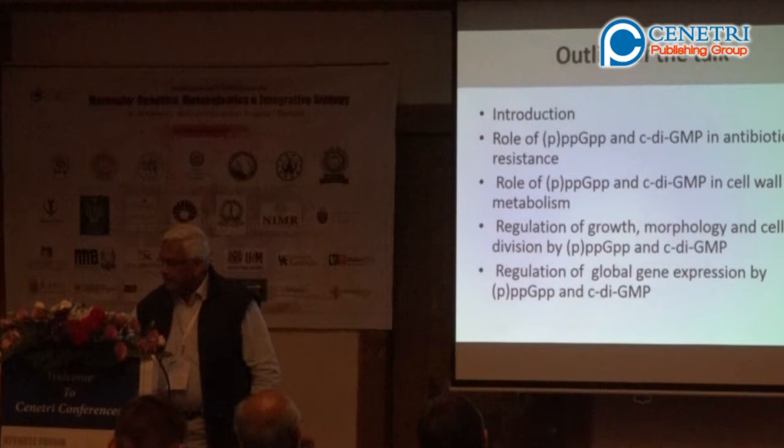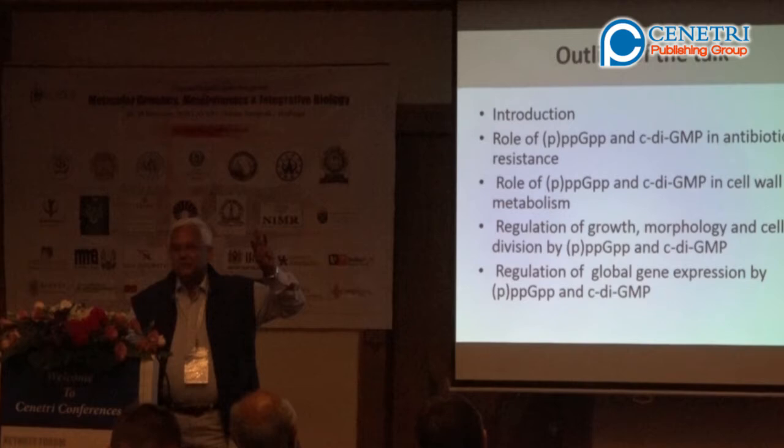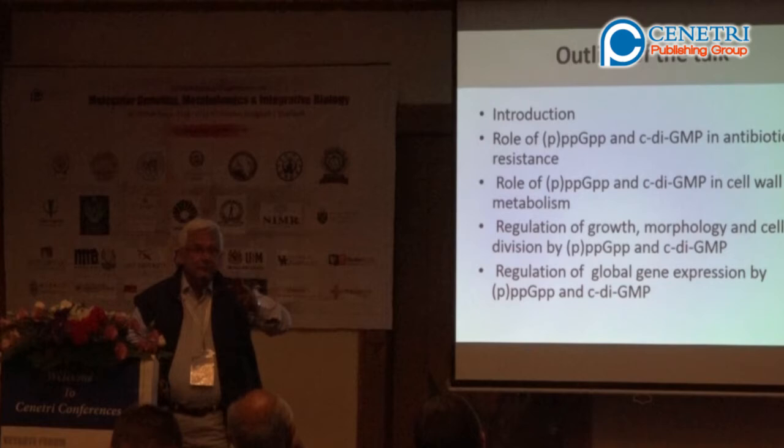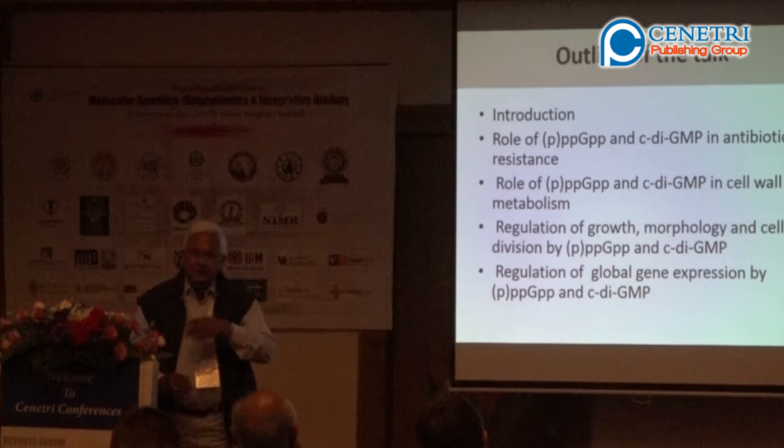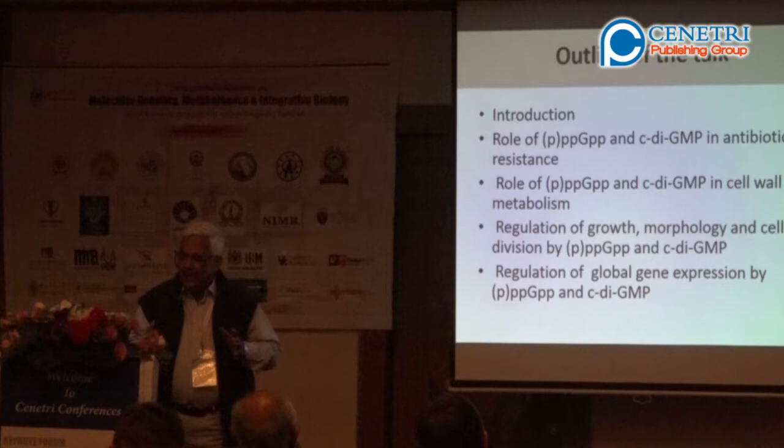This is the outline of the talk. There are three classical bacterial second messengers known so far: first, cyclic AMP, which works through the cyclic AMP receptor protein, discovered in the 1950s; second, guanosine tetraphosphate and pentaphosphate (ppGpp), discovered in the 1960s; and third, cyclic-di-AMP, discovered in 1989.